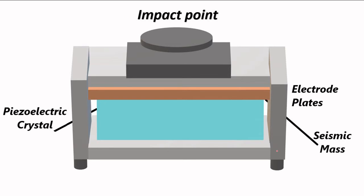This is the whole design of the piezoelectric transducer. We have a casing inside which there is the piezoelectric crystal, a seismic mass attached for safety purposes, and an impact point where the force or pressure is applied. The force is channelized through the seismic mass to the piezoelectric crystal, and the two electrodes across the ends capture the generated electric potential. It is then sent to proper signal conditioning circuitry and analog-to-digital conversion devices to give a proper digital output.